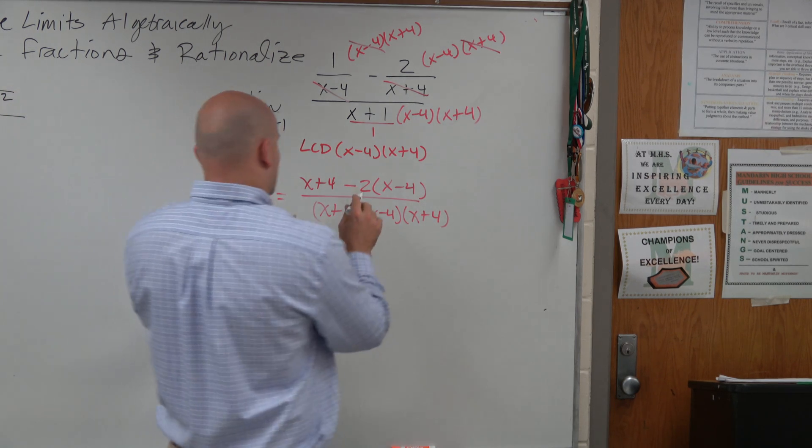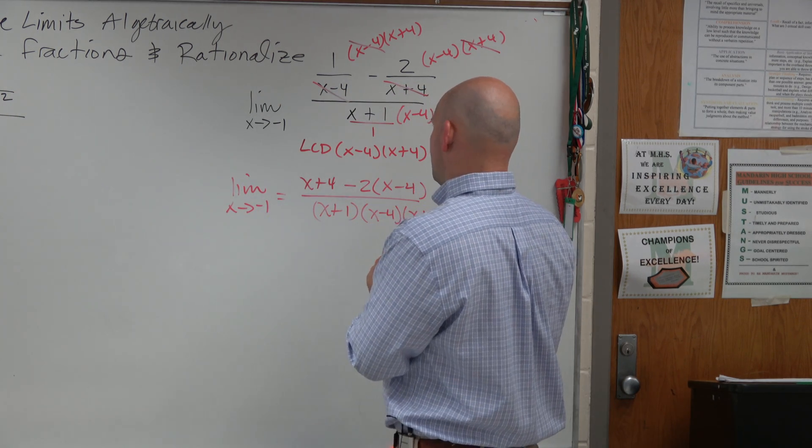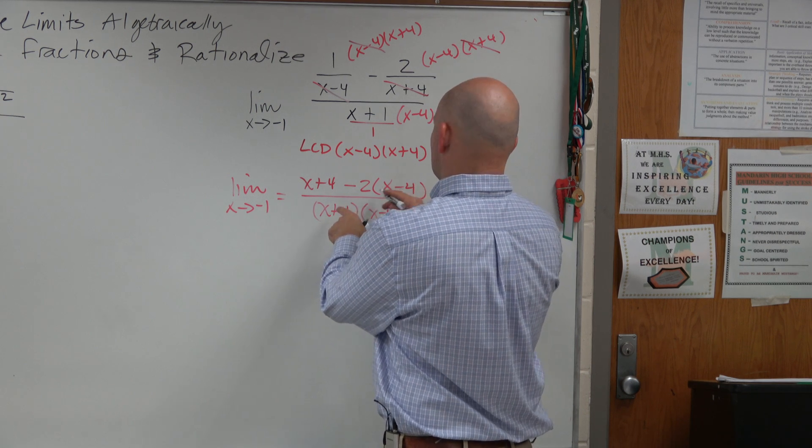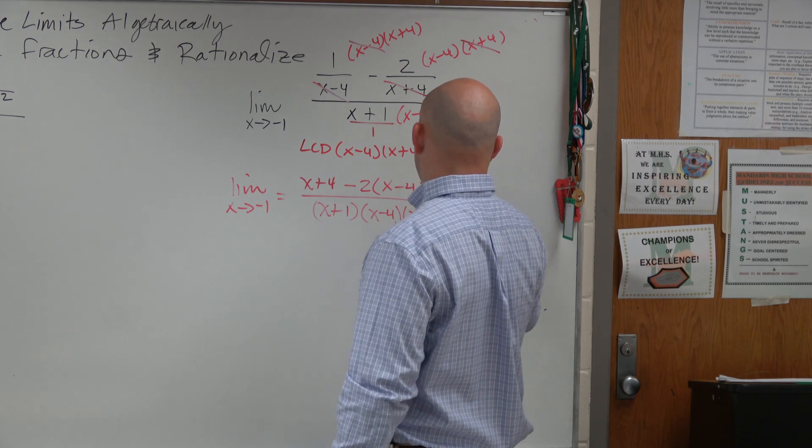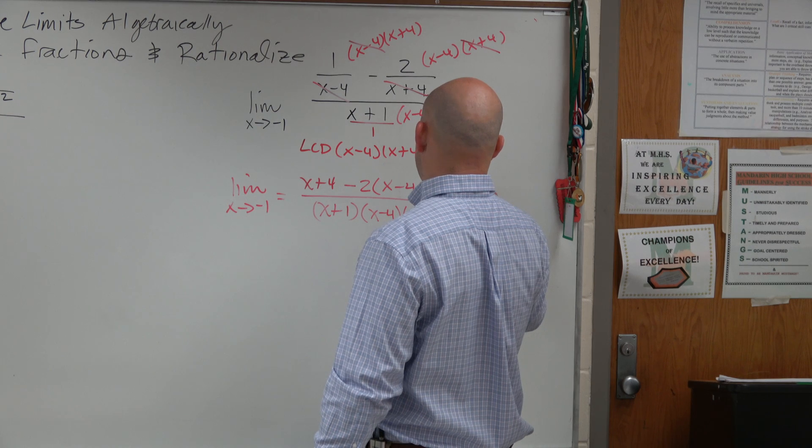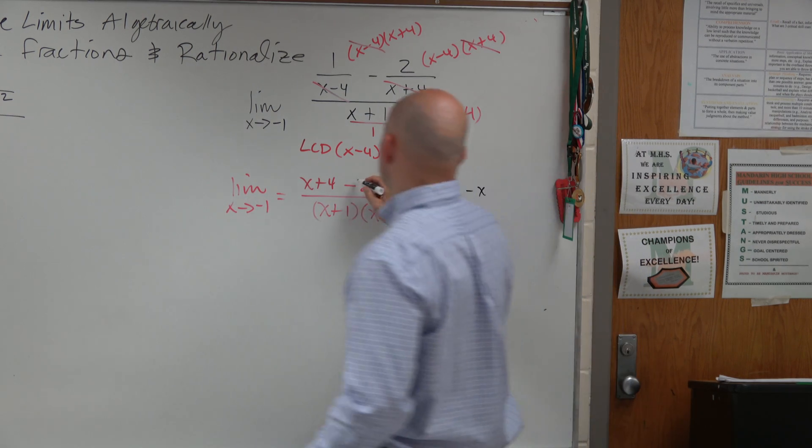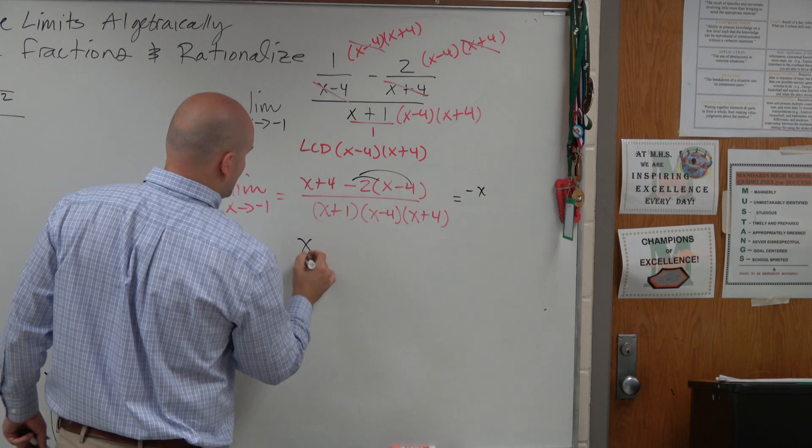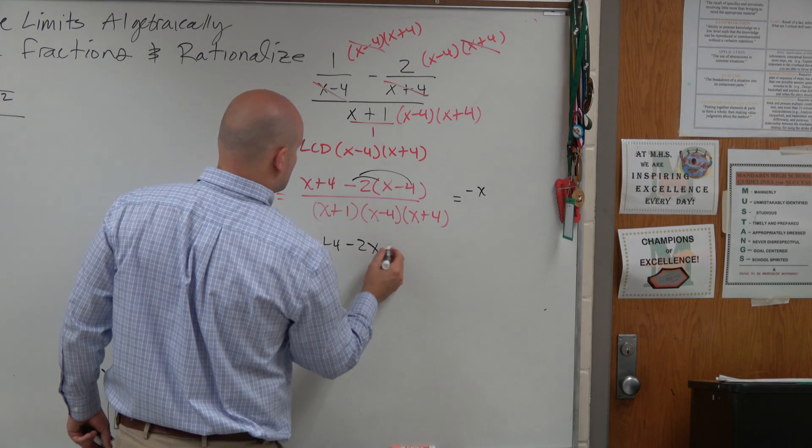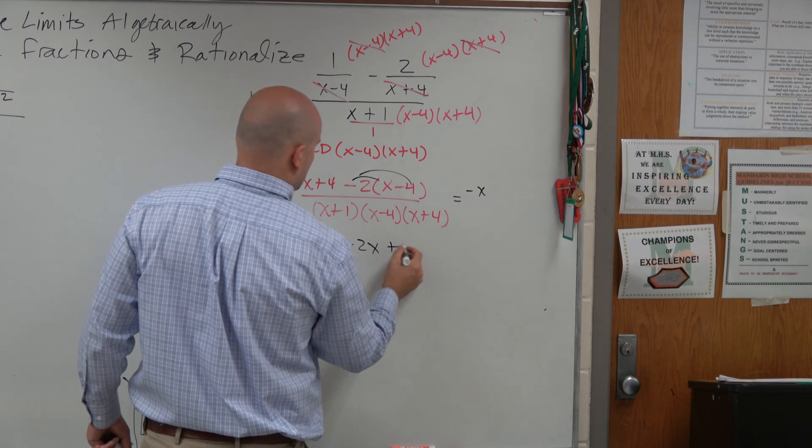So we go ahead and simplify this. Here, we're going to be left with, this should have been a, let's see, that's going to be a negative x. So we distribute this. So we're going to have x plus 4 minus 2x plus 8.